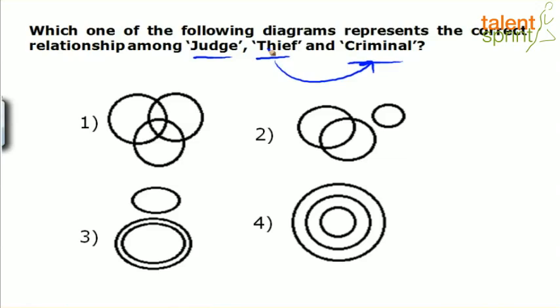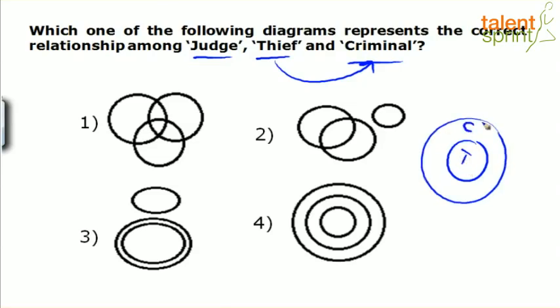All thieves are criminals — so in the diagram, thief should be completely inside criminal. This is similar to syllogisms: all A's are B's means A is completely inside B. So if this is thief, it has to be inside criminal. All criminals are not thieves, but all thieves are criminals — so thief is a smaller circle inside the criminal circle.